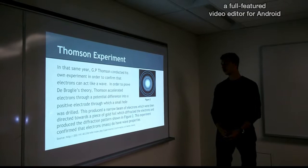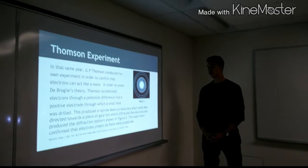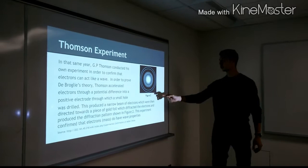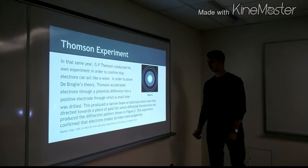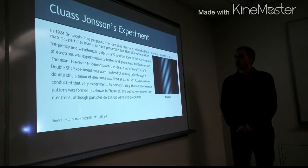into a positive electrode through which a small hole was drilled. This produced a narrow beam of electrons, which were then directed towards a piece of gold foil, which diffracted the electrons and produced a diffraction pattern shown in figure 2. This experiment confirmed that electrons of mass do have wave properties. Here is the pattern that was shown from his experiment, which confirmed that mass can act like a wave, the same way a photon of light acts like a wave.